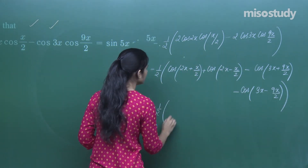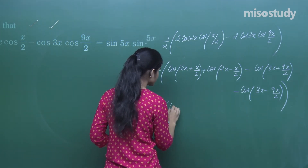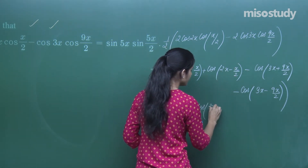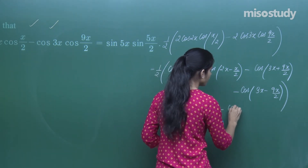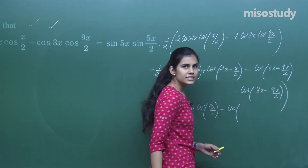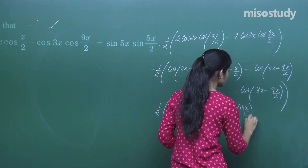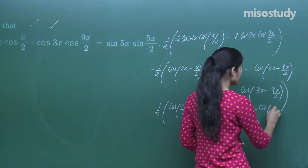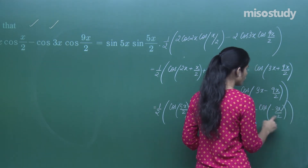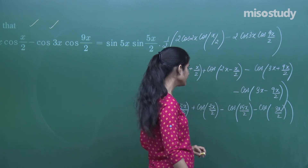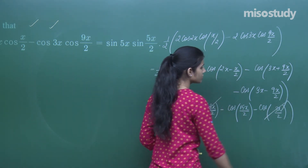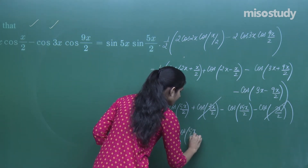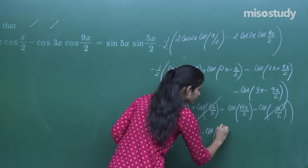Since cos(−θ) = cos θ, the cos(3x/2) and cos(−3x/2) terms cancel out. We are left with (1/2)[cos(5x/2) − cos(15x/2)]. Now applying cos C − cos D = −2 sin((C+D)/2) · sin((C−D)/2), with C = 5x/2 and D = 15x/2.